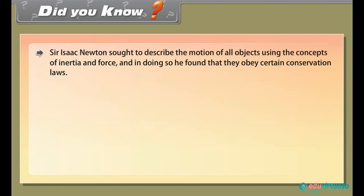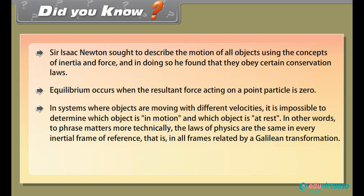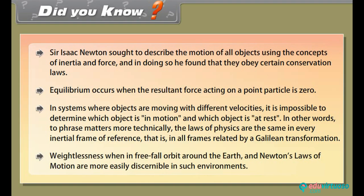Did you know? Sir Isaac Newton sought to describe the motion of all objects using the concepts of inertia and force, and in doing so he found that they obey certain conservation laws. Equilibrium occurs when the resultant force acting on a point particle is zero. In systems where objects are moving with different velocities, it is impossible to determine which object is in motion and which object is at rest. In other words, the laws of physics are the same in every inertial frame of reference, that is, in all frames related by a Galilean transformation. Weightlessness when in free fall orbit around the earth, and Newton's law of motion are more easily discernible in such environments.